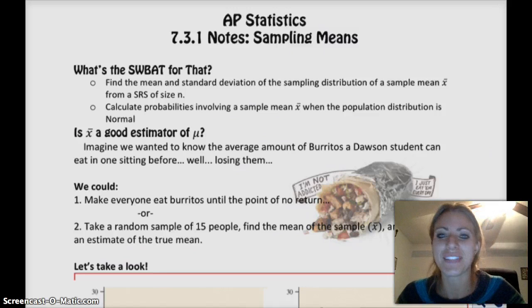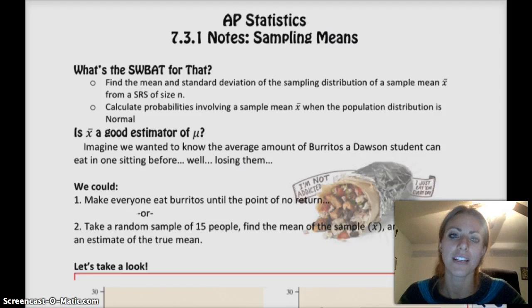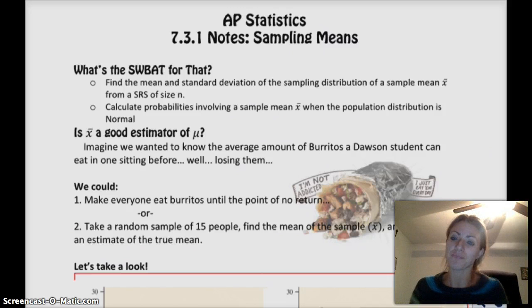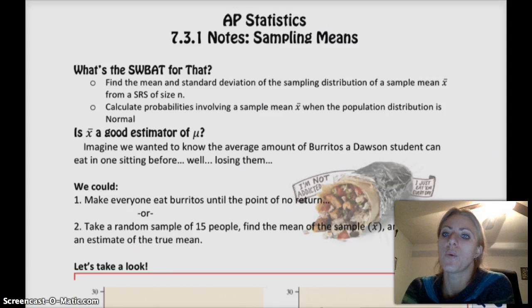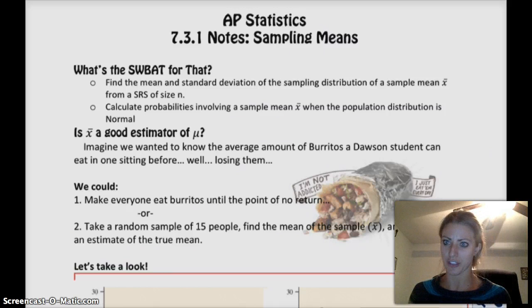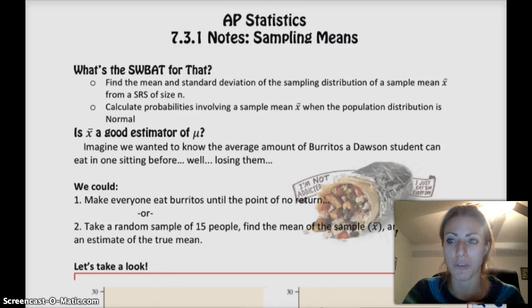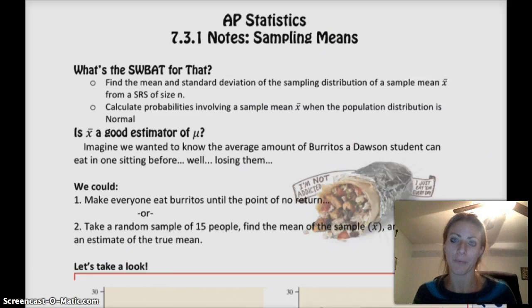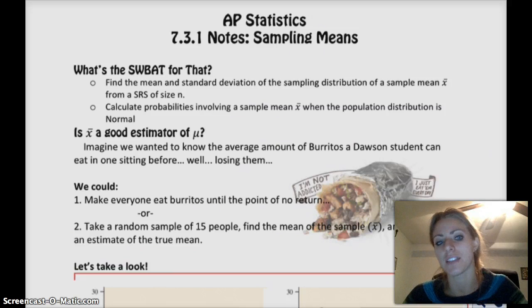Alright, so 7.3 is all about sampling means, and we've done sampling proportions before. And we kind of figured out that under certain conditions, the sampling distribution of the proportions of p-hat has the same mean as the true population proportion, so that's cool. So we want to figure out if that's the same kind of a scenario with means.